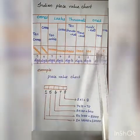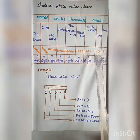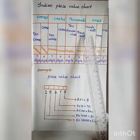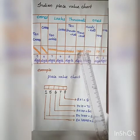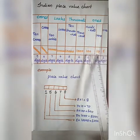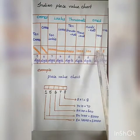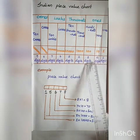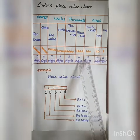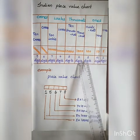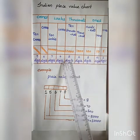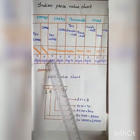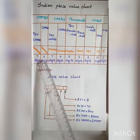In the Indian place value chart: the 1's place is a 1-digit number; 10's is 2 digits; 100's is 3 digits; 1000's is 4 digits; 10,000's is 5 digits; lakhs is 6 digits; 10 lakhs is 7 digits; crores is 8 digits; 10 crores is 9 digits.